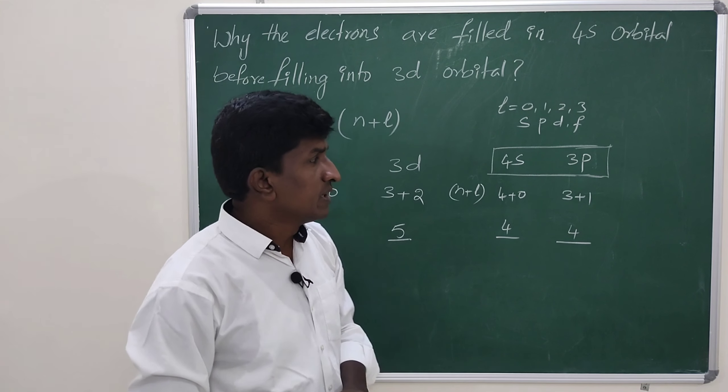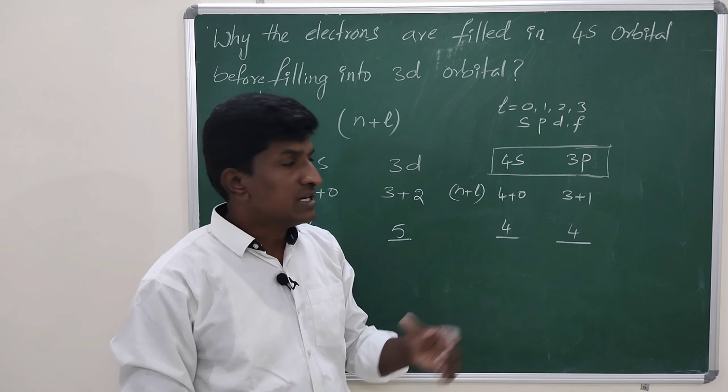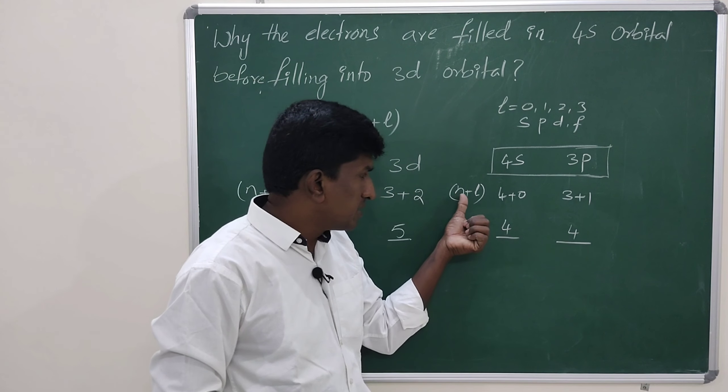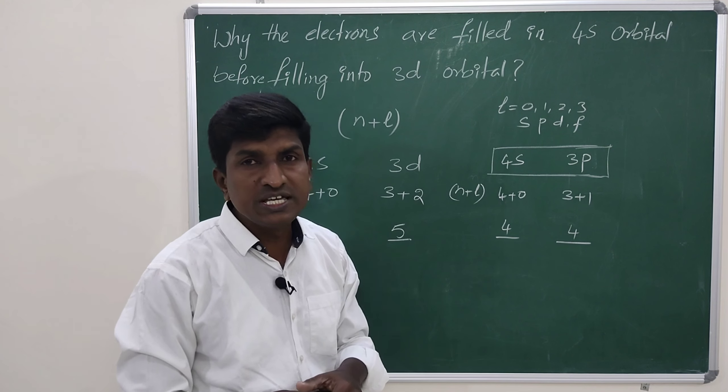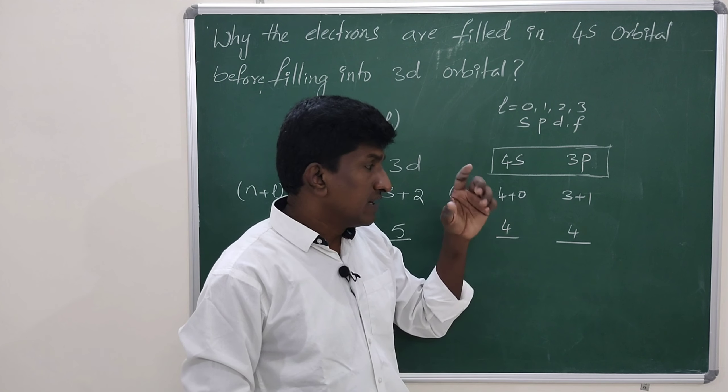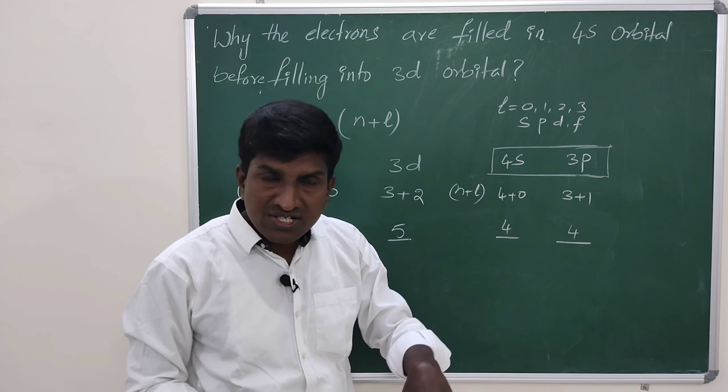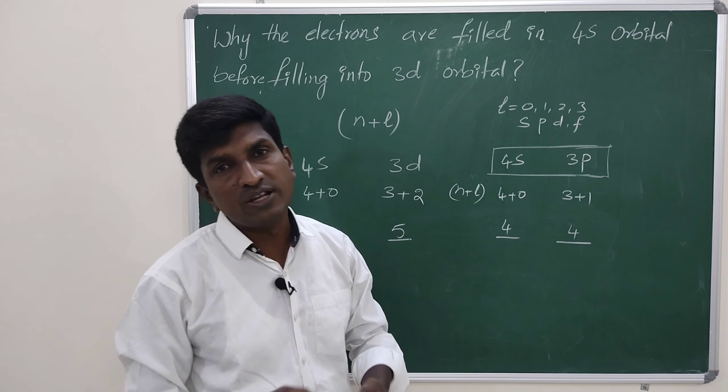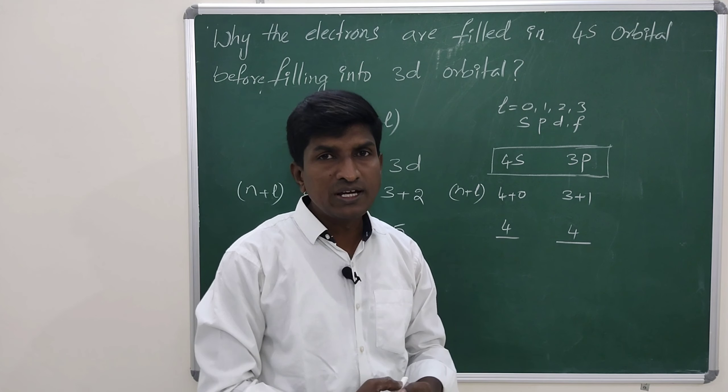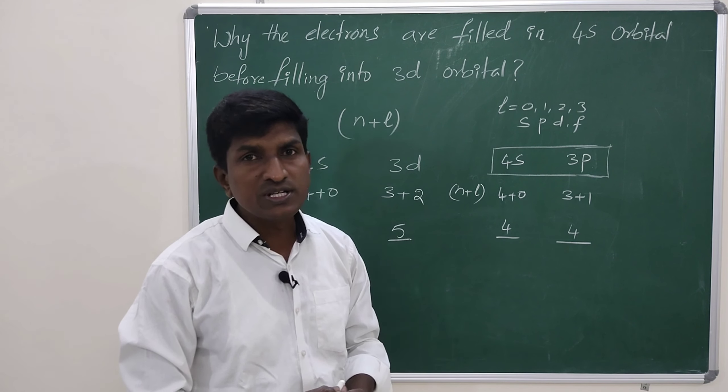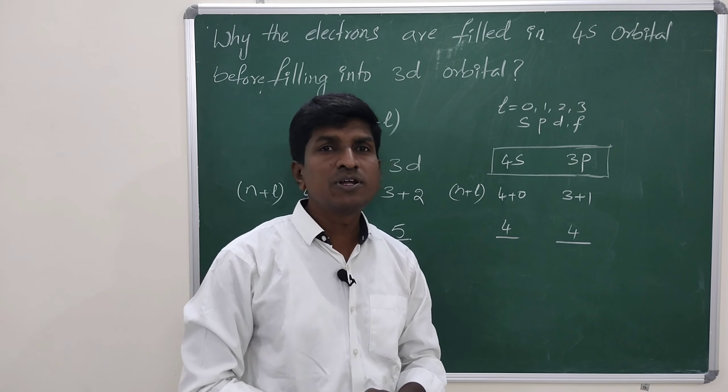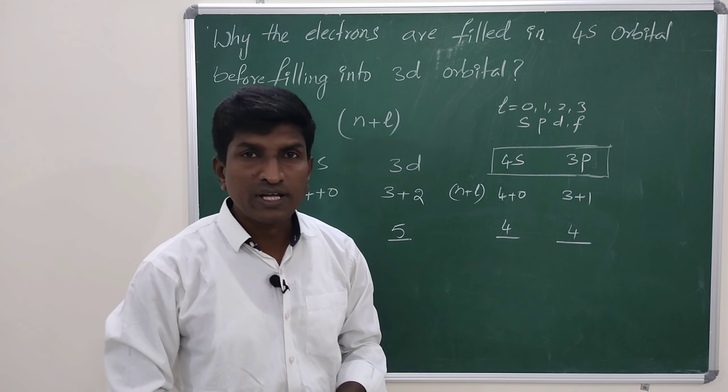If any two orbitals having same energy as per n plus l value, then the orbital which belongs to inner shell, that orbital is first filled with electron. This is the important question which is regularly answered in your board exam. Thank you.